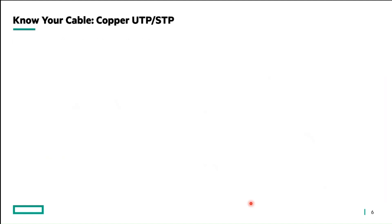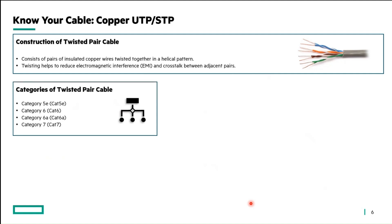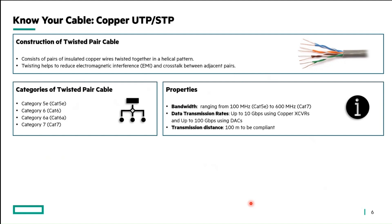Copper cable is constructed using a twisted pair of copper wires. This twisting helps reduce electromagnetic interference and cross-talk between adjacent pairs. Twisted pair copper cables come in different categories: Category 5E, Category 6A, and 7. The properties of copper cable include bandwidth ranging between 100 MHz to 600 MHz, that's for CAT5E to CAT7 respectively.